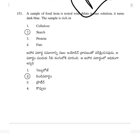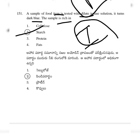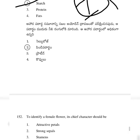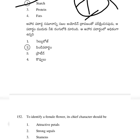A sample of food item is tested with dilute iodine solution. It turns dark blue. The sample is rich in — option 2: starch. Dark blue color change in iodine solution indicates starch.